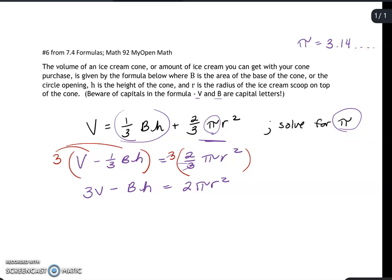Now all that's left is we have to get this pi by itself. What's hindering that is this 2 being multiplied in and the r squared, so we want to divide by 2r squared in order to undo that. That will leave us with pi, and on this left-hand side we have 3V minus BH over 2r squared equals pi.